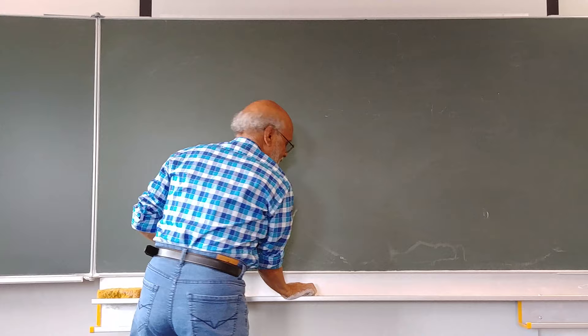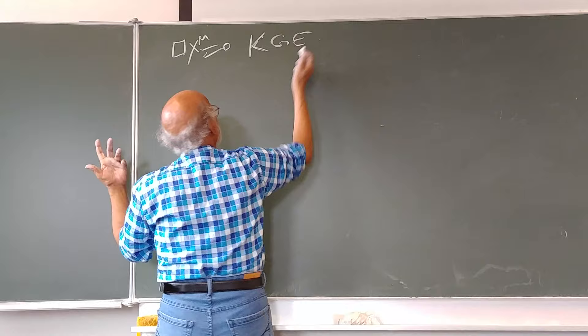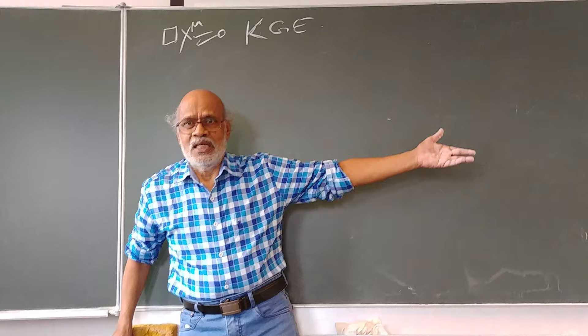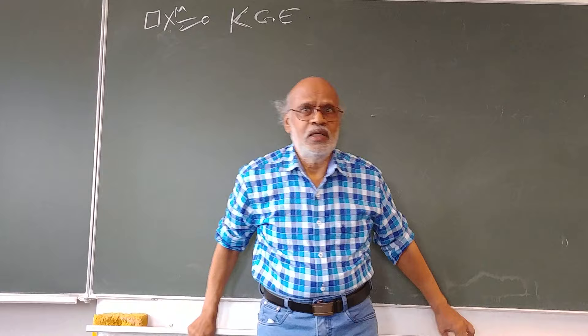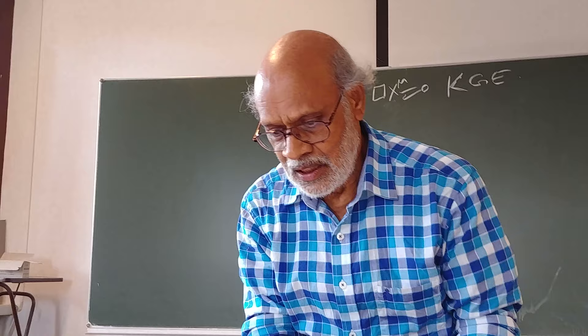We now come back to this: as you can see, this is the Klein-Gordon equation for the massless field. What we do now, making use of the light-front coordinates, is we would like to split this equation into two parts.